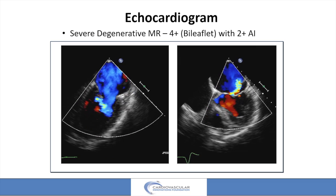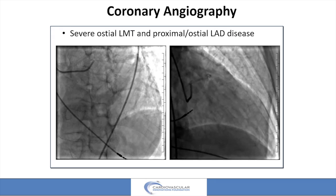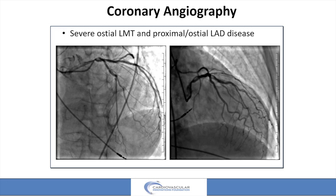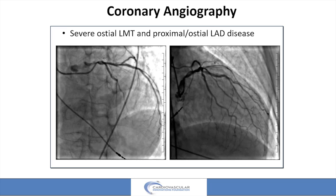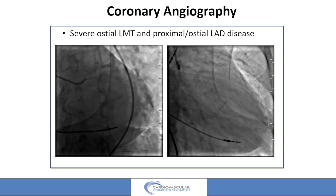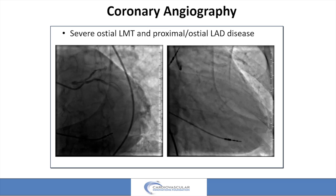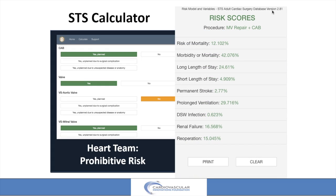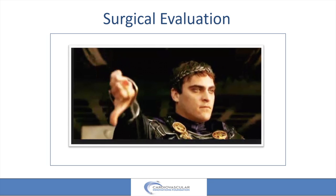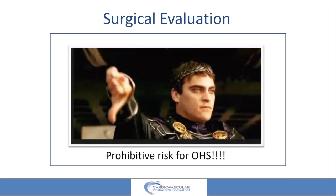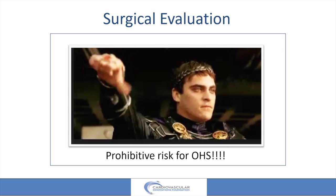He's also got 2-plus AI and coronary disease with ostial left main and ostial LAD disease. You can see it here as well. The STS calculator just for an MVR or mitral repair and CABG is 12% — and that's not including the aortic valve if that were needed. So nobody from surgery was particularly interested in taking this on.